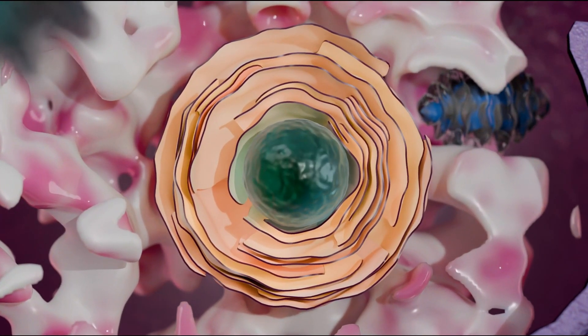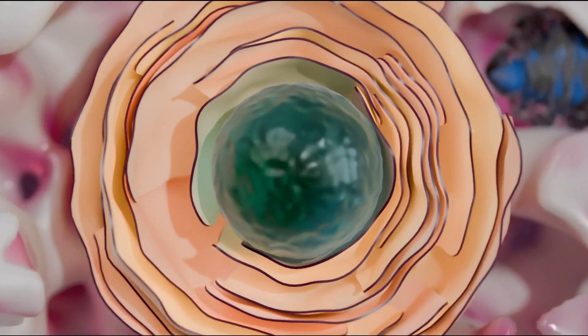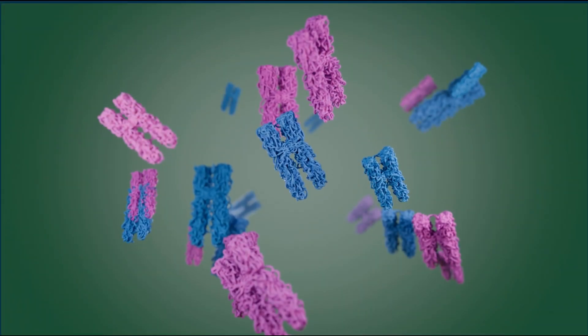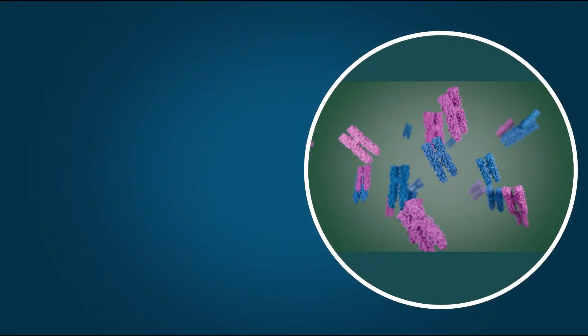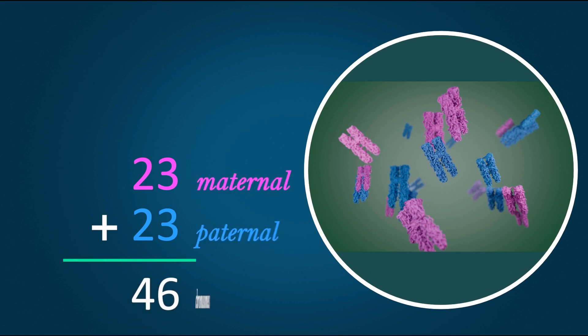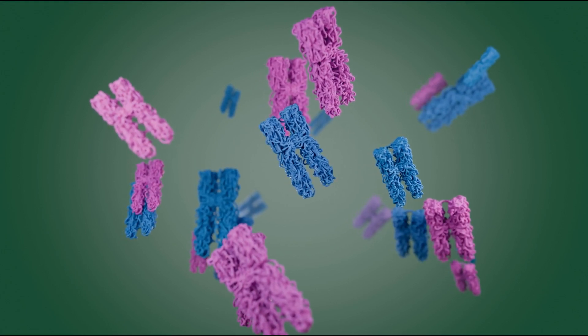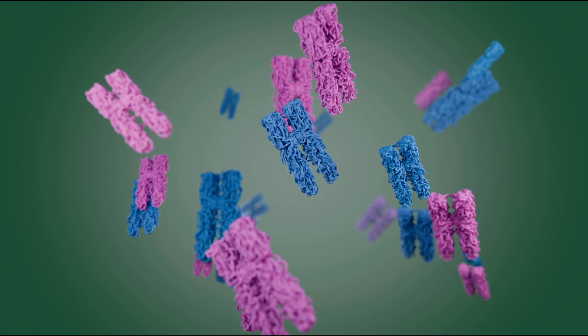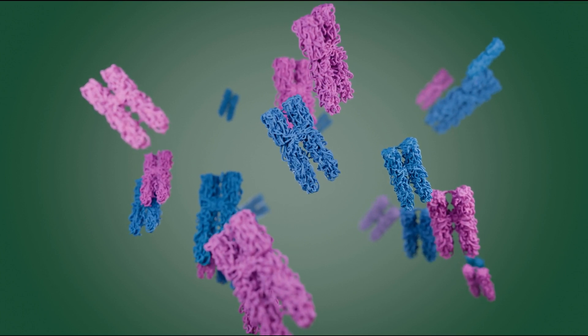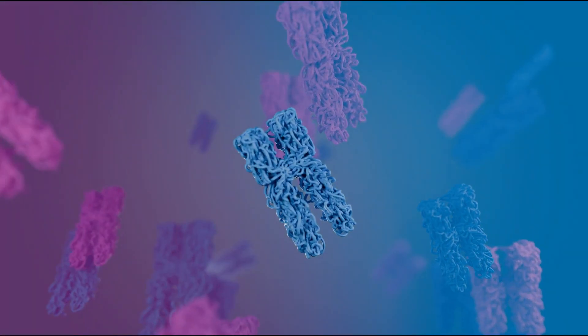In most human cells, there is a structure called a nucleus. Inside the nucleus, we can see the chromosomes. They have two sets of 23 chromosomes, for a total of 46 chromosomes. Chromosomes are not visible in the cell's nucleus, not even under a microscope, when the cell is not dividing.